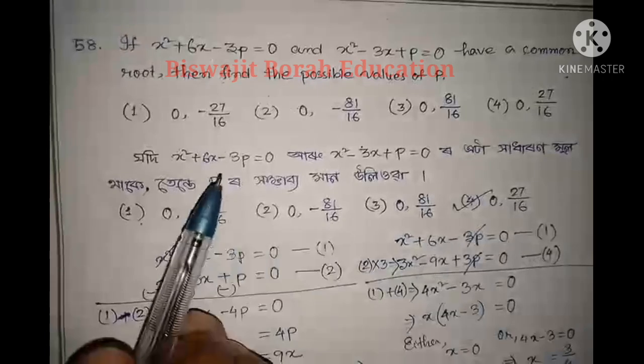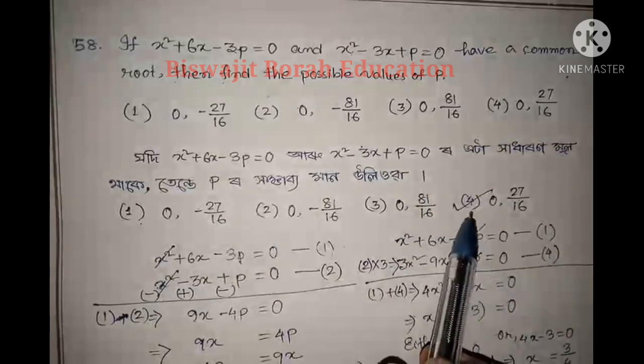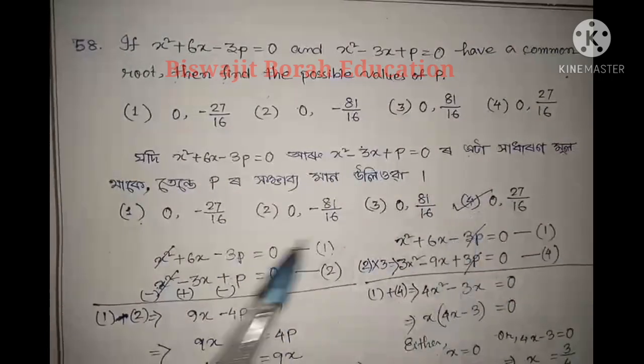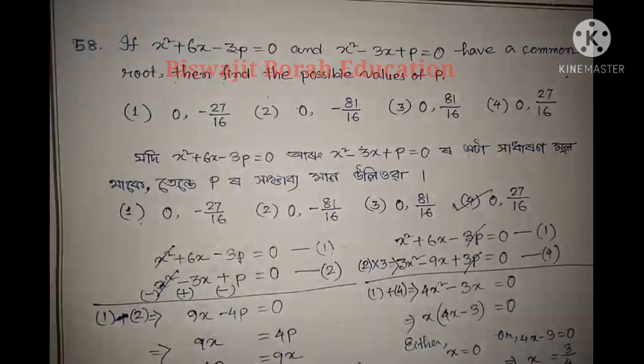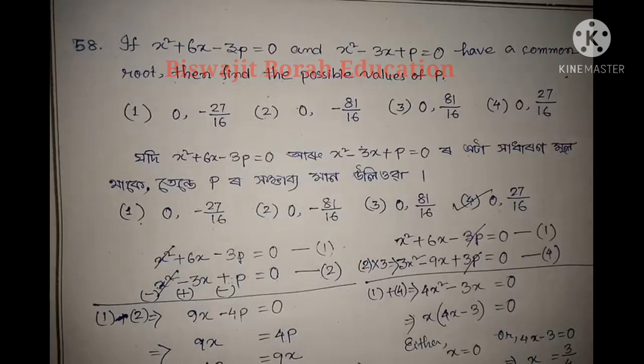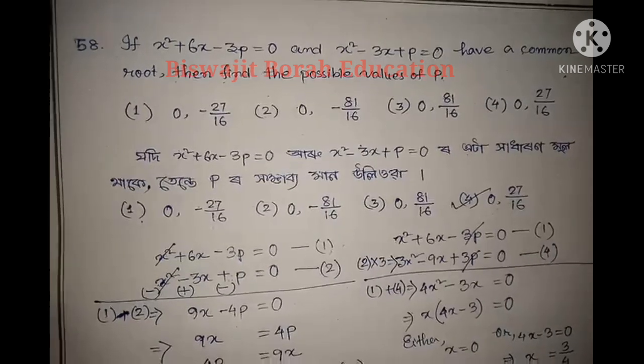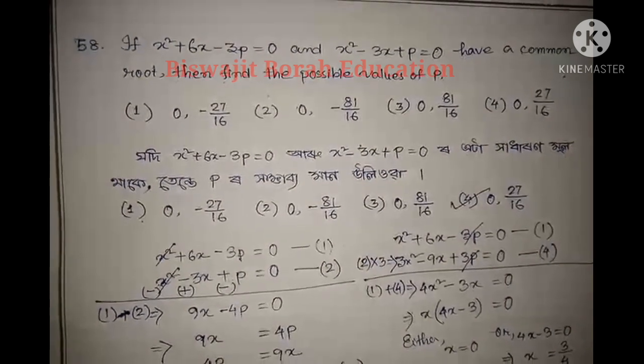So we should select the option: p equals 0 or 27 by 16. I will comment on the next 59 number question.